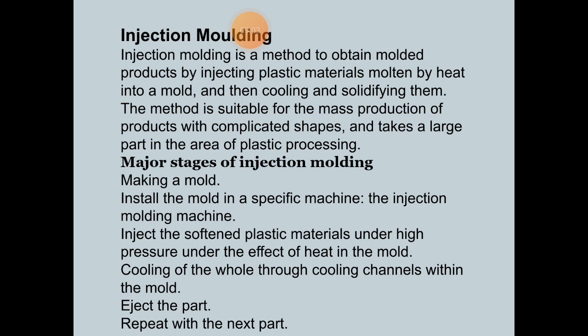The next important process is Injection Molding. Injection molding is a method to obtain molded products by injecting plastic material, heated until molten, into a mold and then cooling and solidifying. The method is suitable for the mass production of products with complicated shapes and takes a large part in the area of plastic processing.